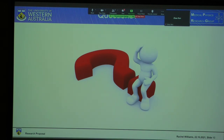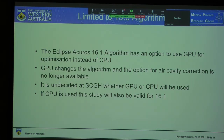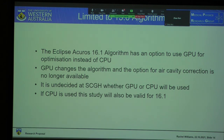Question: You mentioned an update to the algorithm is upcoming — do you know what's actually changing in that update? Response: Yes. The 16.1 algorithm has an option to use GPU for optimisation instead of CPU. GPU changes the algorithm and the option for air cavity correction is no longer available. It's not yet decided at Charlie's whether GPU or CPU will be used. If CPU is used, the study is also valid for 16.1, but if not, it isn't.